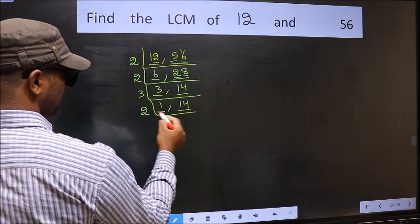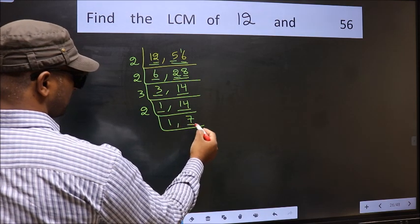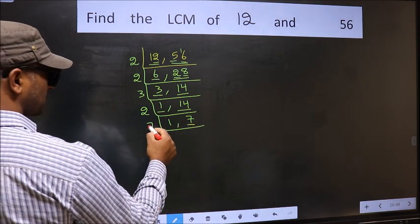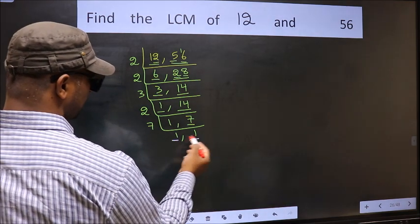14 is 2×7 is 14. Now we have 7, 7 is a prime number so 7×1 is 7. So we got 1 in both the places.